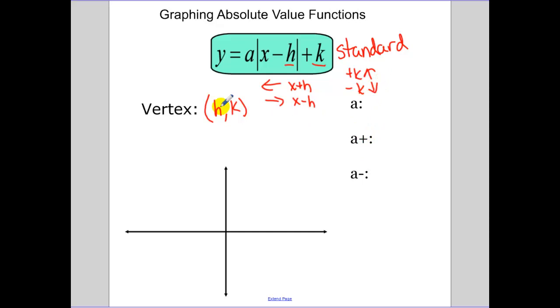Since an absolute value function looks like a V, where these are straight lines, what the a is, is the vertical stretch or compression. Because these are lines, a is essentially the slopes of these sides. If a is positive, we open up. If a is negative, we open down.